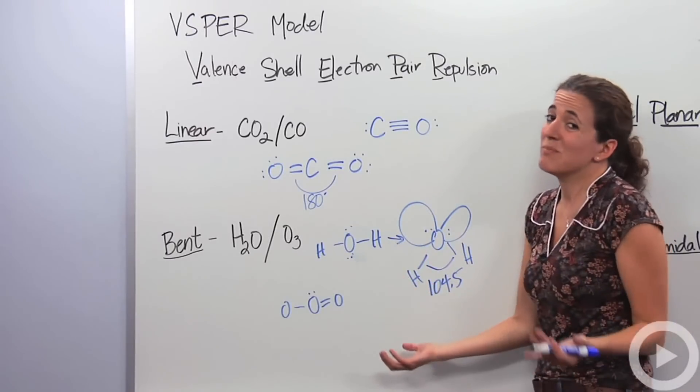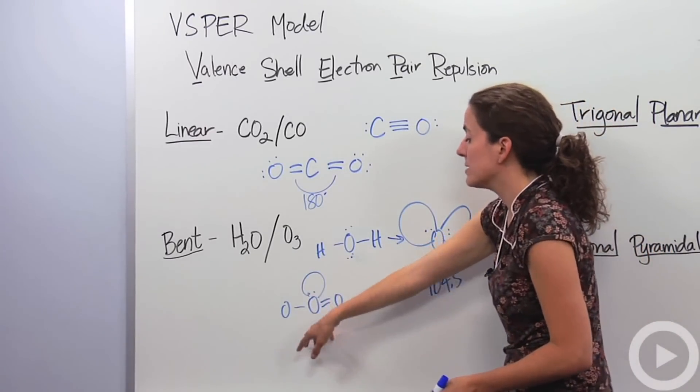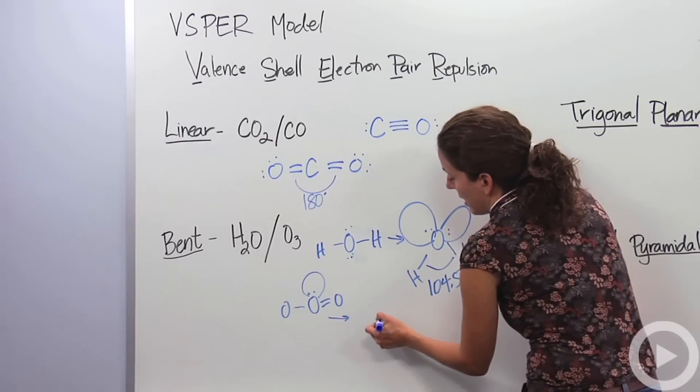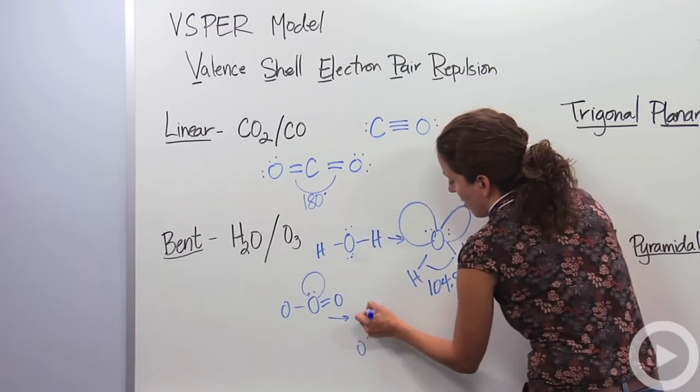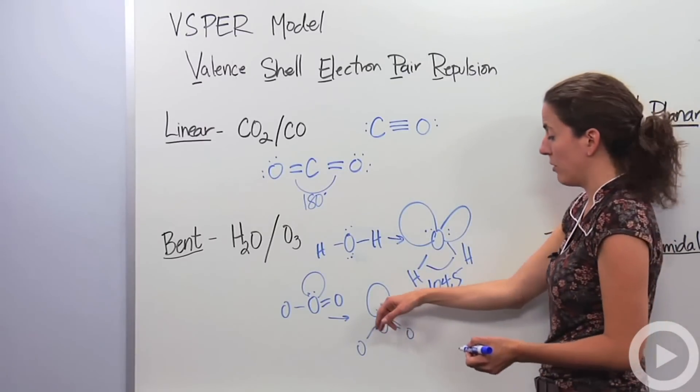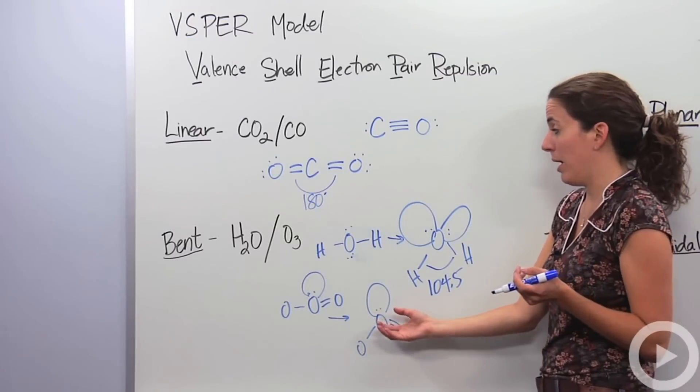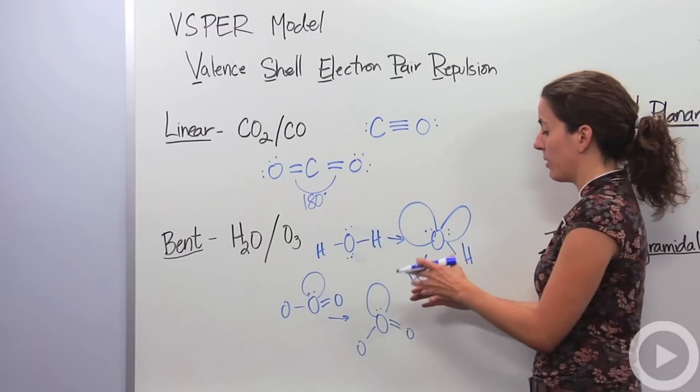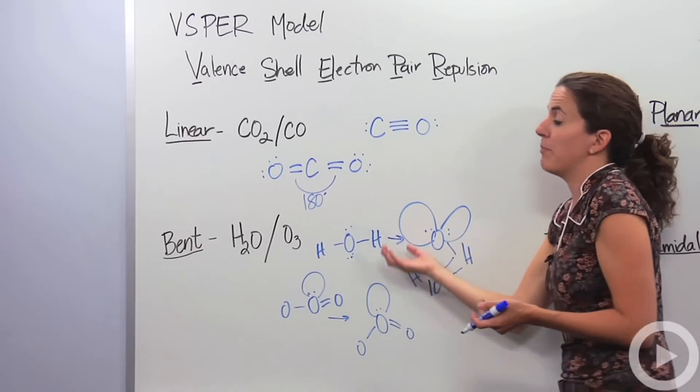It doesn't matter. The electrons are still going to want as much room as possible, making these guys push down, making it look like this. Also, a bent molecule. So these lone pairs of electrons, here and here, make the bent molecule different than the linear molecule. They're actually going to make these guys closer to each other. So that is the bent molecule.